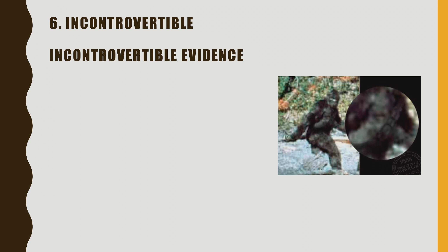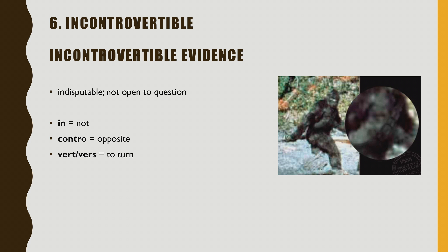Incontrovertible — incontrovertible evidence. That means indisputable, not open to question — absolutely true, factual, definite evidence that no one can argue against. Breaking it down: 'in' means not, 'contro' means opposite as in contradiction, and 'vert' or 'verse' means to turn — that's where we get controversy. Controversy is when people turn against each other and argue, but with incontrovertible evidence there is no controversy because the evidence is absolutely certain.